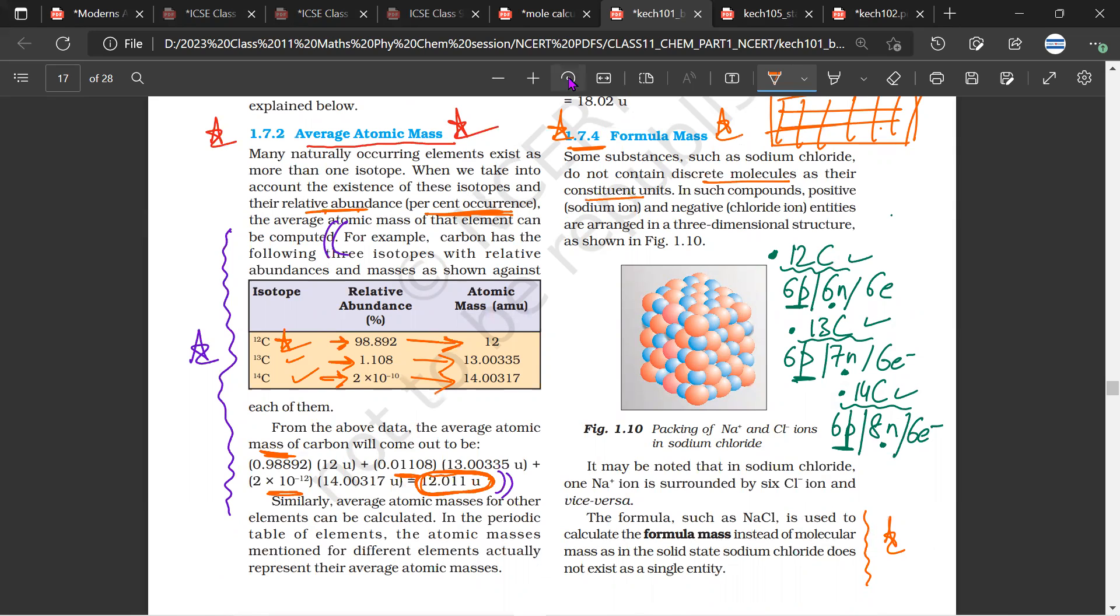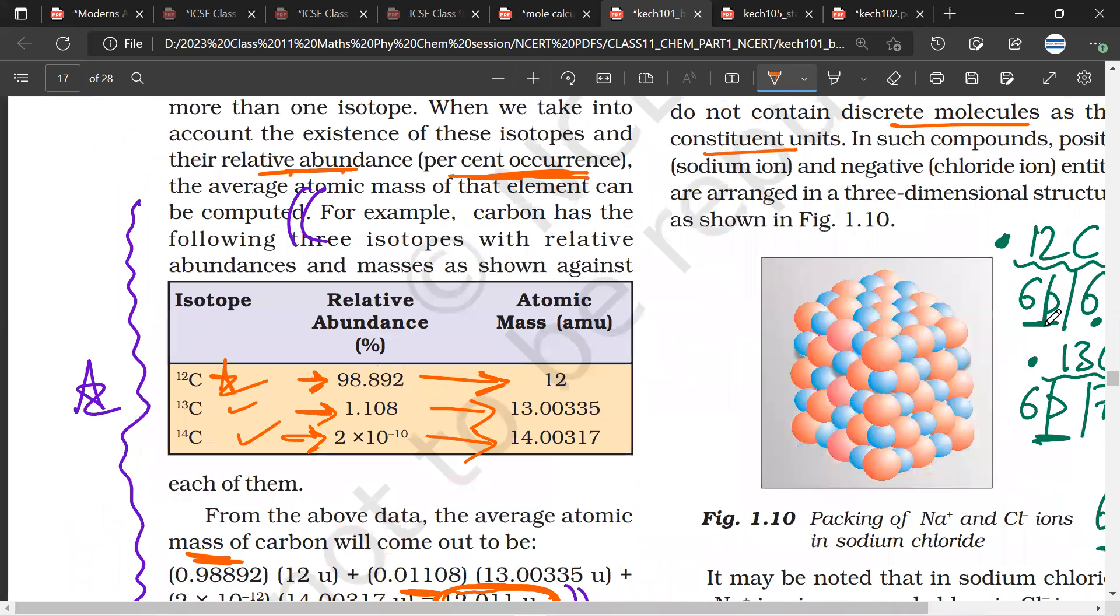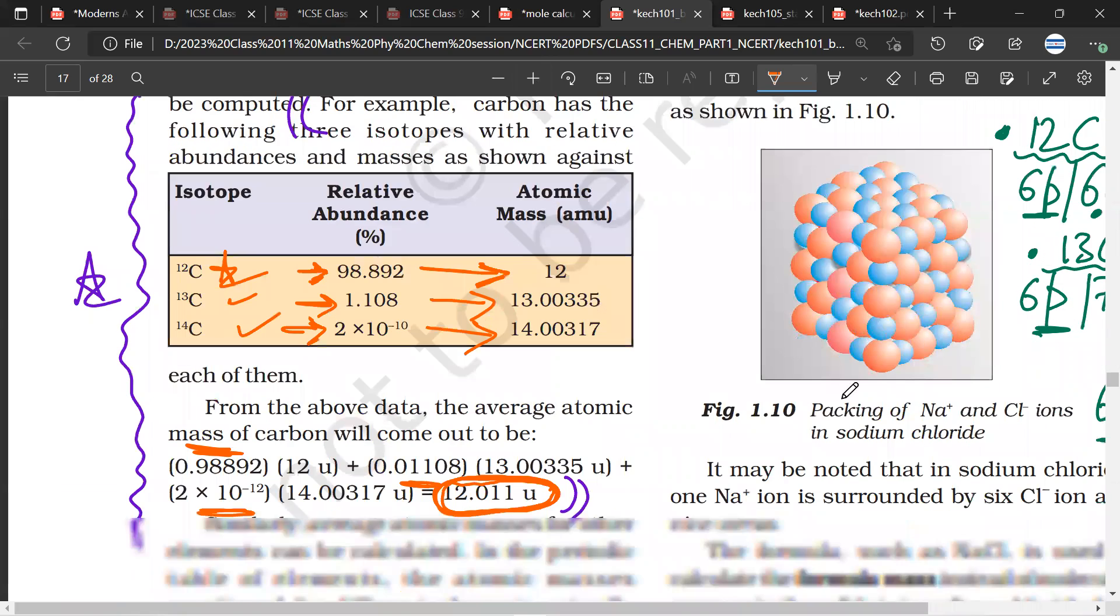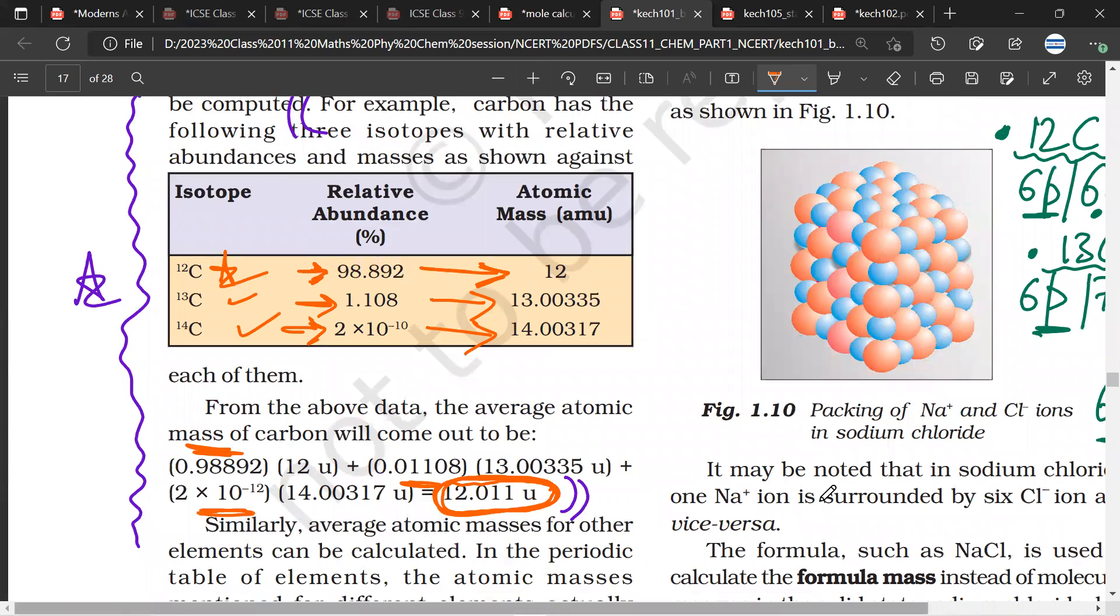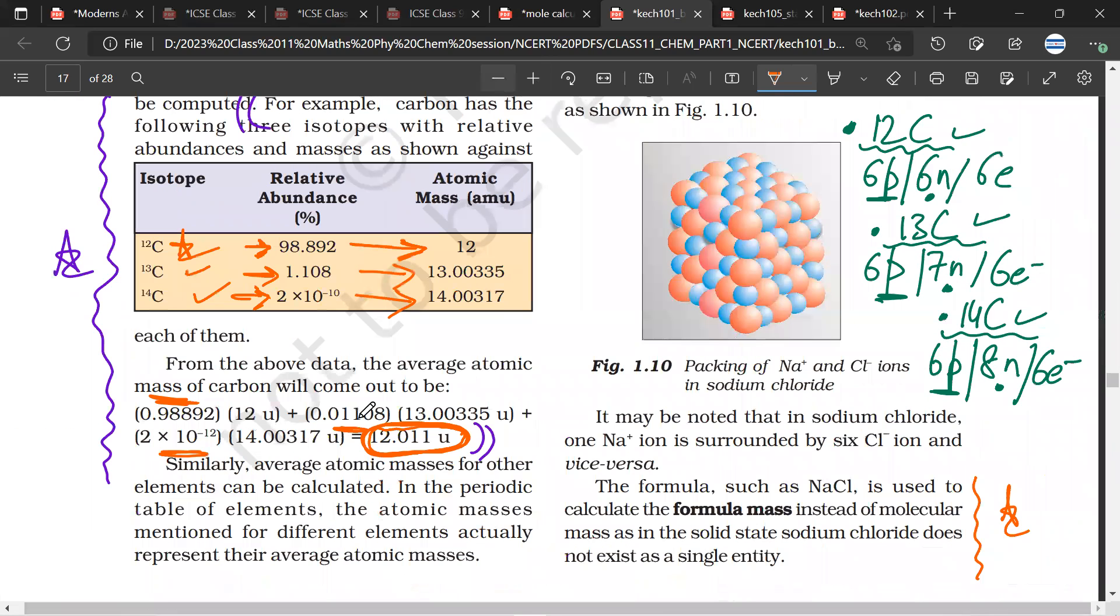Their structure, for example, in NaCl, again this is something that they cover in class 9th, class 10th also. This is how the structure of NaCl looks like. You have ions of sodium surrounded by ions of chlorine.